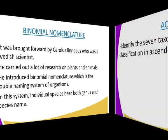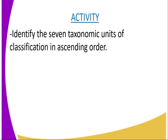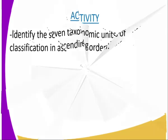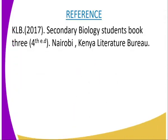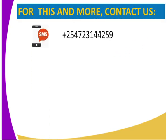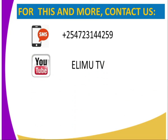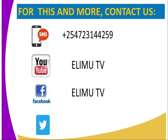Having done that, we are going to have the following activity, whereby you are required to identify the seven taxonomic units of classification in ascending order. For more information on this lesson, you can refer to our KLB secondary biology experience book, or the Kenya Literature Bureau. To get this lesson and more of our biology lessons, you can send us an SMS to the number appearing on our screen, or subscribe to our YouTube channel or our Facebook page, both under Elimu TV, or tweet us at ElimuTV underscore Kenya.